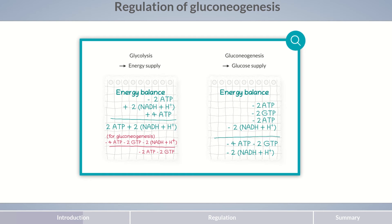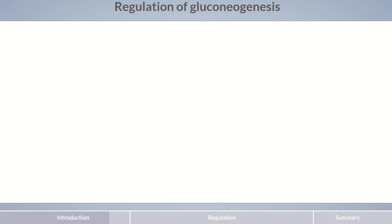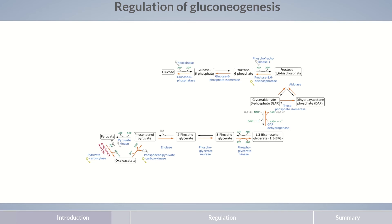This is important because some cells, such as those of the brain or erythrocytes, depend on glucose as a source of energy. The counteracting processes of glycolysis and gluconeogenesis need to be coordinated carefully so that they don't occur at the same time. Otherwise, energy could be easily wasted. Coordination is enabled by reciprocal regulatory processes.